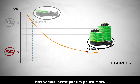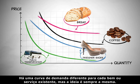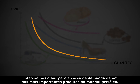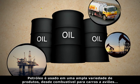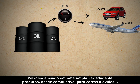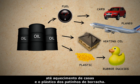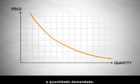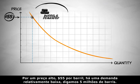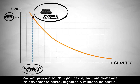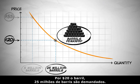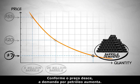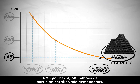There's a different demand curve for every good or service out there, but the ideas are the same. So let's look at the demand curve for one of the most important products in the world: oil. Oil is used in a wide variety of products, from fueling cars and planes to heating homes and making plastic for rubber duckies. At a high price of $55 per barrel, that's a relatively low demand — say, 5 million barrels. At $20 per barrel, 25 million barrels are demanded. As the price goes down, the demand for oil increases, and at $5 per barrel, 50 million barrels of oil are demanded.